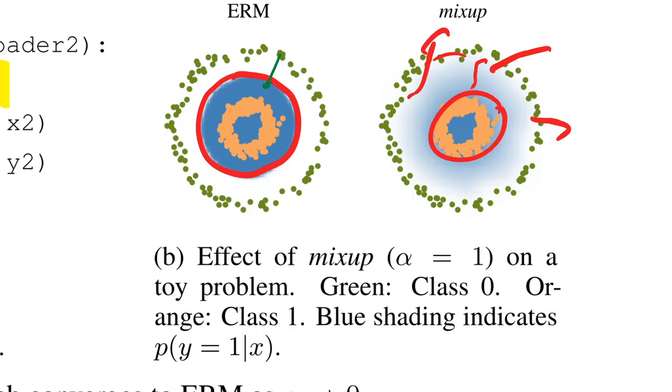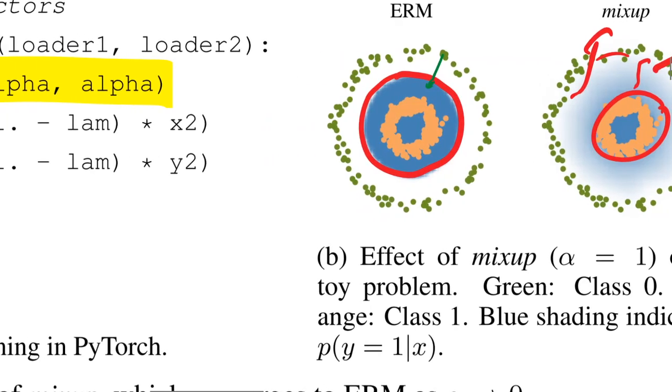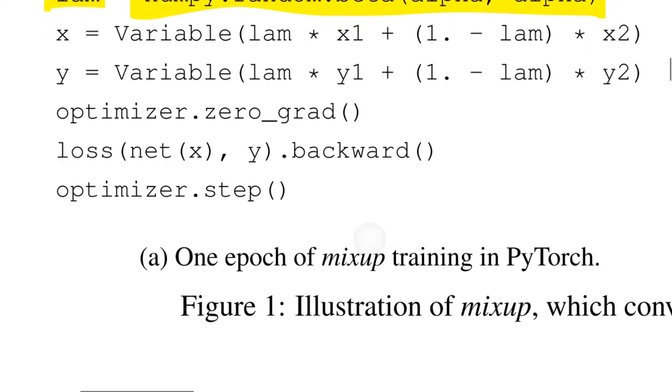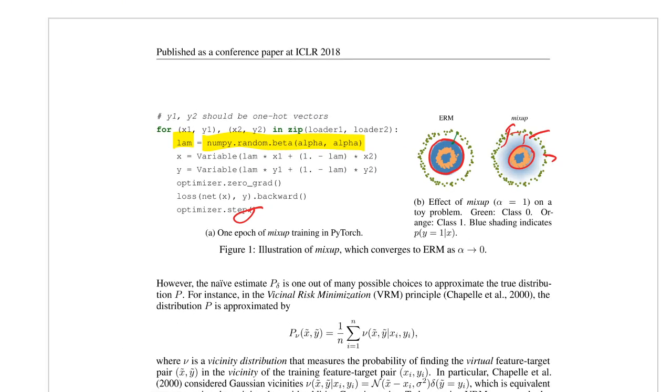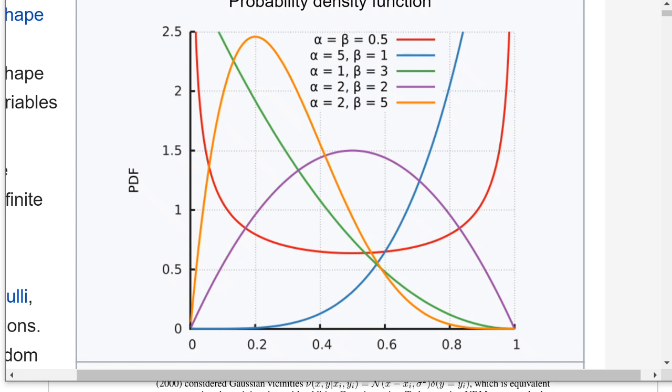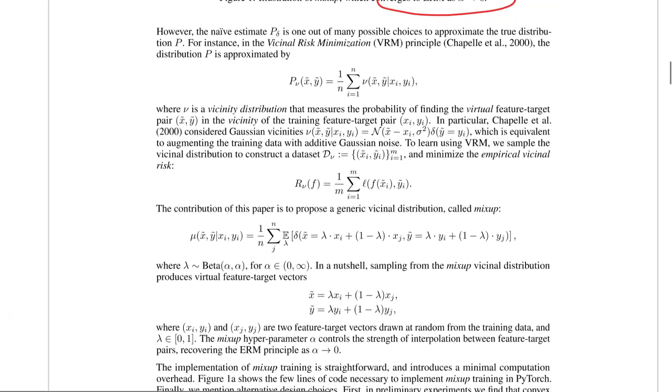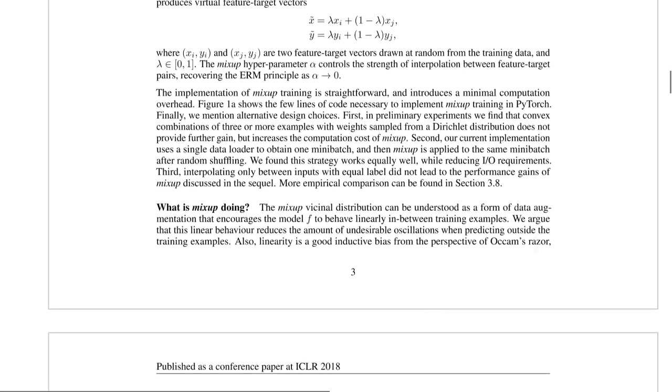Now, of course, this here works particularly in this linear 2d setting. But as we can see, the same reasoning applies to sort of higher layers and higher dimensionality data points. They say something interesting here that mix up converges to the classical method as alpha approaches zero. So that would push your beta distribution basically in the middle all the way down. And you would only sample from the very left or the very right. So you can smoothly interpolate between this mixing and the classic method.